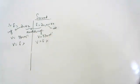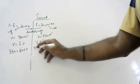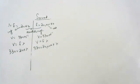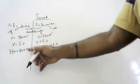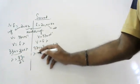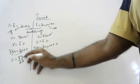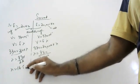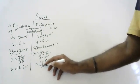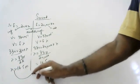Using v = f × λ: for the lower end, 330 = 20 × λ, and for the upper end, 330 = 20,000 × λ. So wavelength at the lower end is 330 divided by 20, and at the upper end is 330 divided by 20,000. This gives lambda equal to 16.5 meters at the lower end, and 0.0165 meters at the upper end.